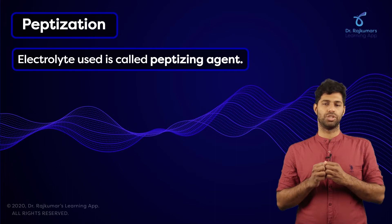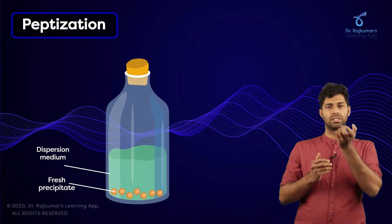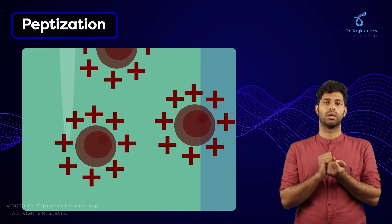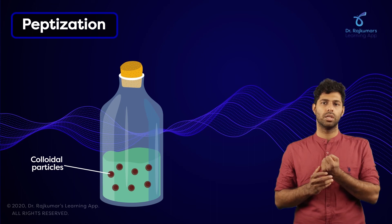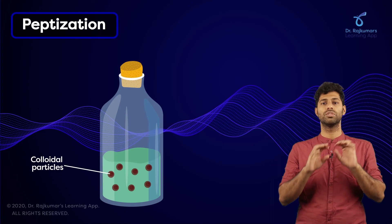You might be wondering what exactly is happening here. When this freshly prepared precipitate is introduced into the medium and shaken, we find that it attracts the ions of this electrolyte — it might be positively charged or negatively charged. It attracts these ions, gains a charge, and immediately disintegrates into smaller molecules of colloidal size. In this way, we find that colloids are formed.